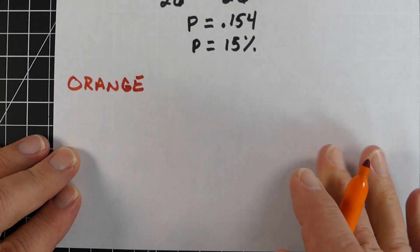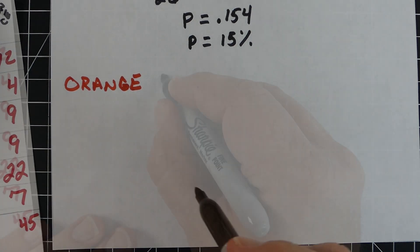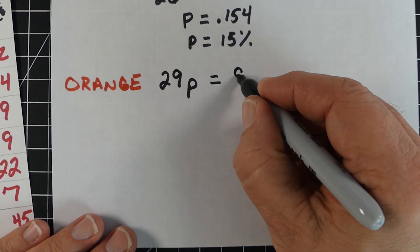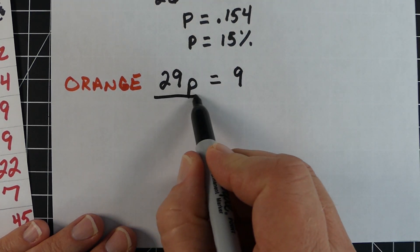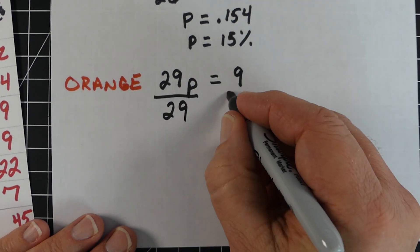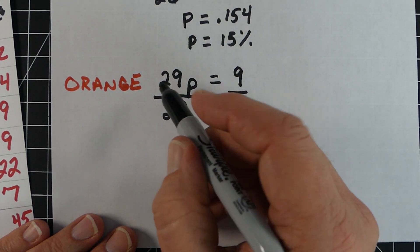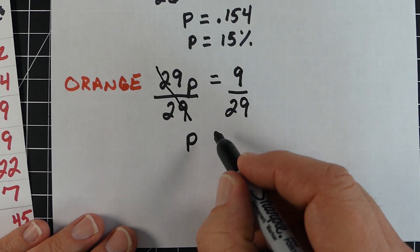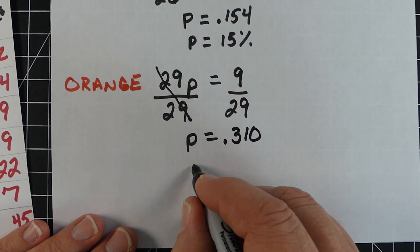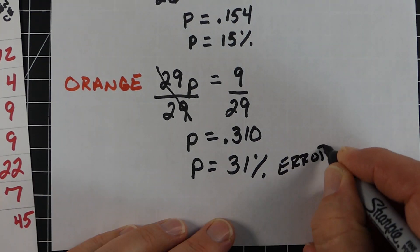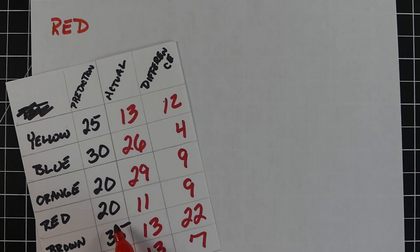Next is orange M&Ms. We had a total of 29 M&Ms in the bag and I was off by 9. I thought 20, it was actually 29. Divide both sides by 29 to get the variable by itself. Nine divided by 29 is 0.31, which rounds to 31% error. Not too bad.